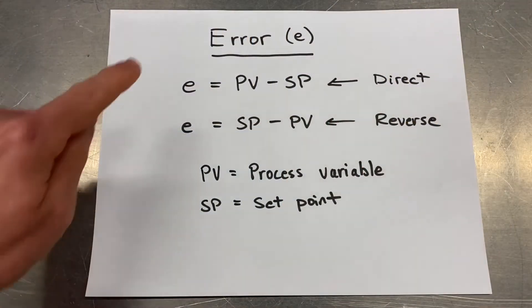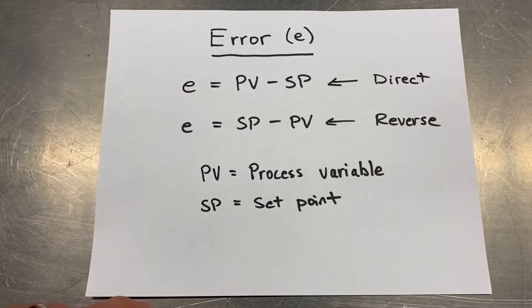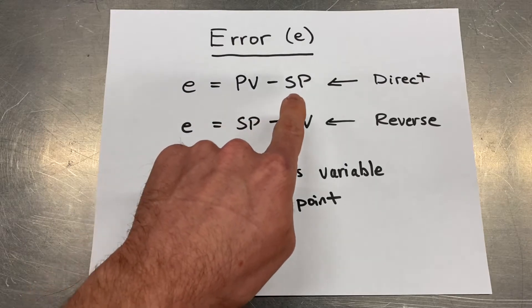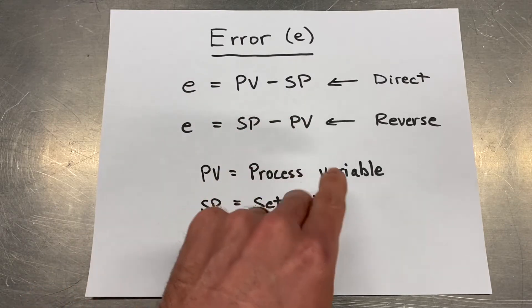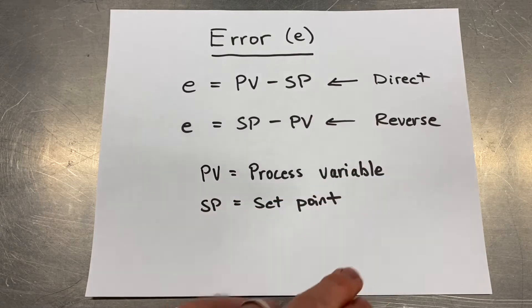The first term we need to become familiar with is error. There's two ways to calculate error: process variable minus set point, and set point minus process variable. We call this either a direct or reverse acting controller.